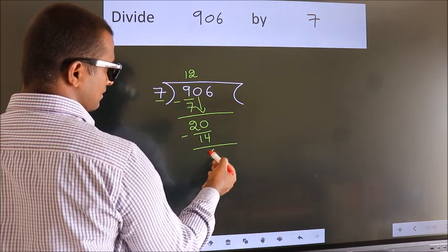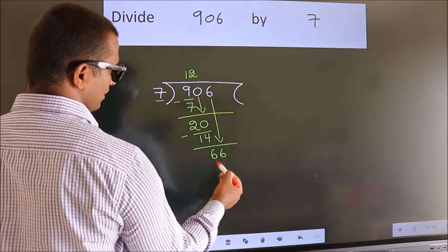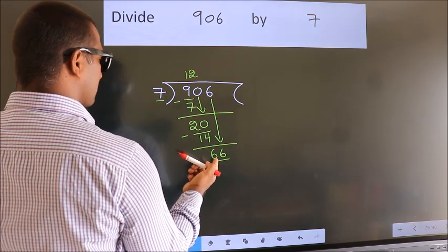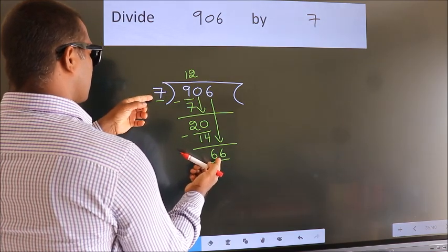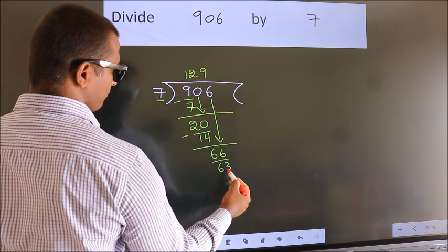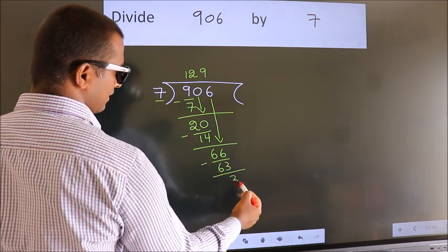After this, bring down the beside number. So 6 down. So 66. A number close to 66 in 7 table is 7 times 9 equals 63. Now we subtract. We get 3.